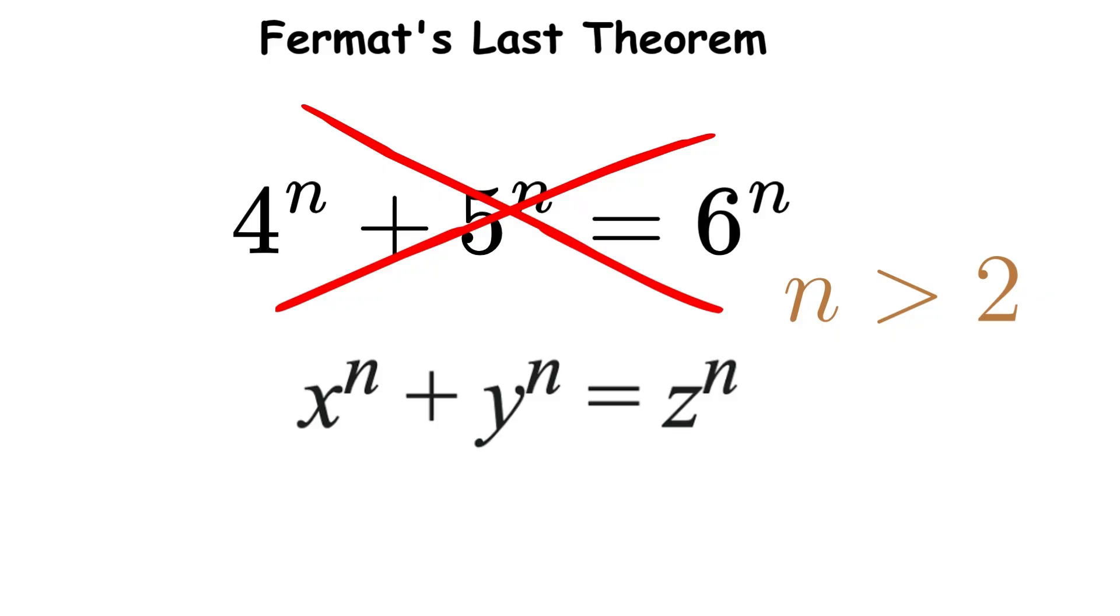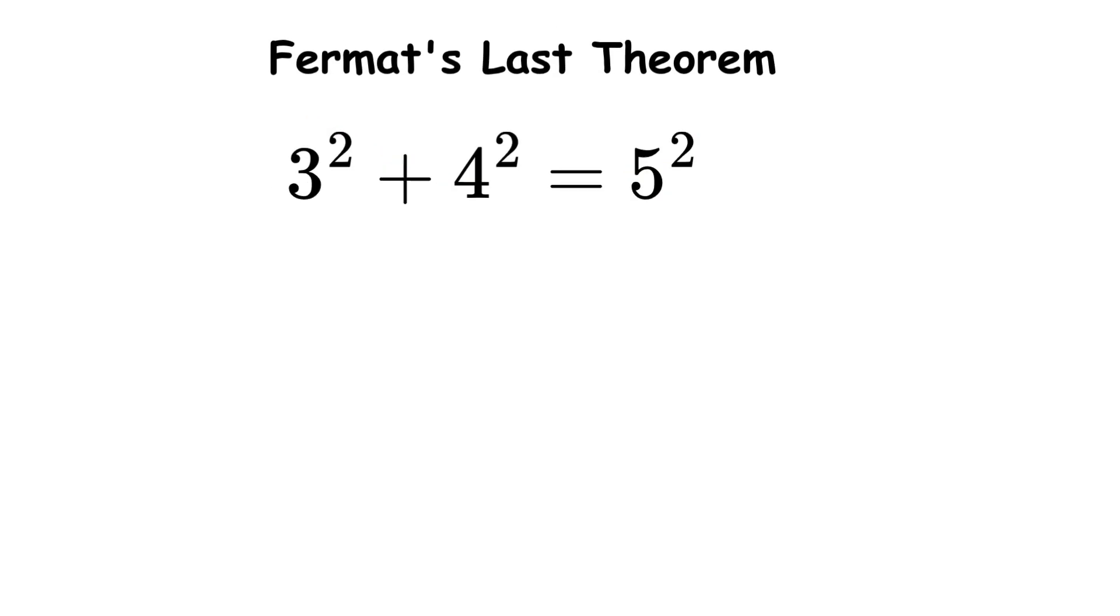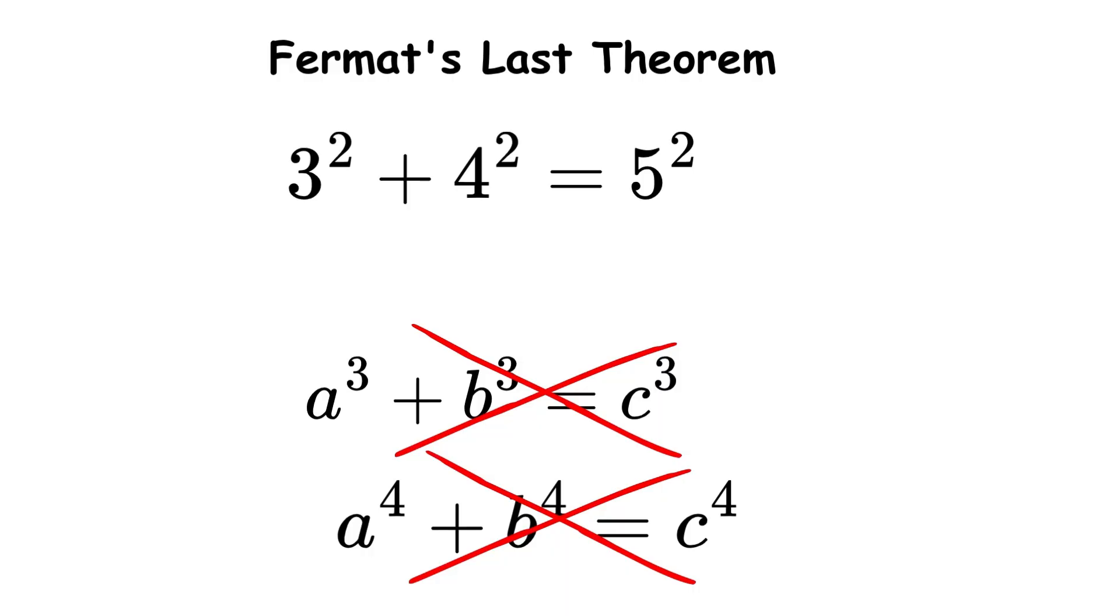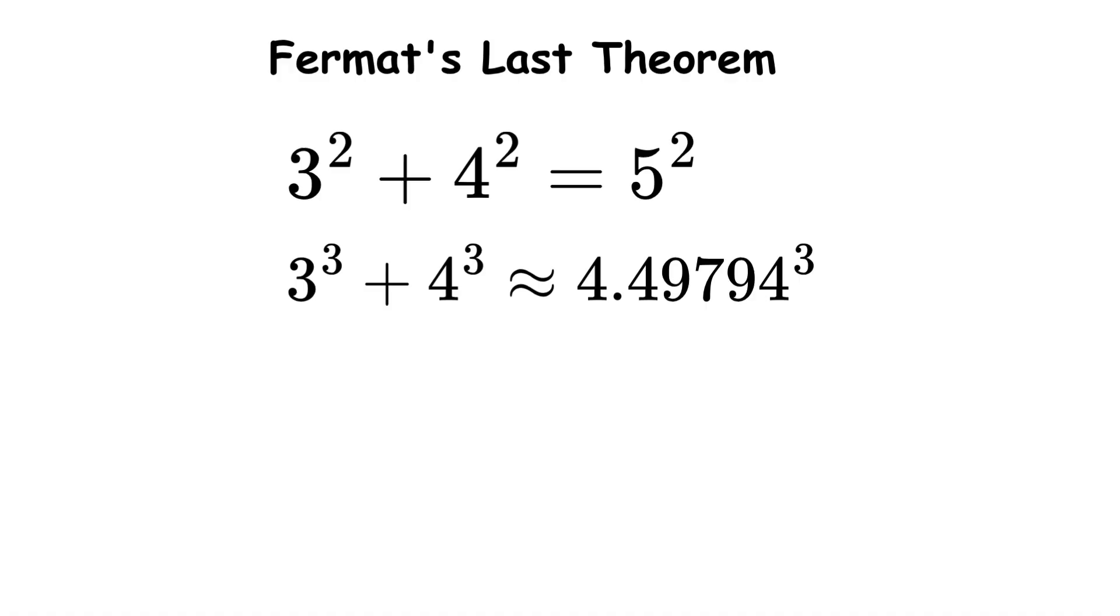While you can find whole-number solutions for squares like 3 squared plus 4 squared equals 5 squared, you cannot find any whole numbers that work for cubes, fourth powers, or any higher powers. For example, there's no combination of whole numbers where one cube plus another cube equals a third cube.